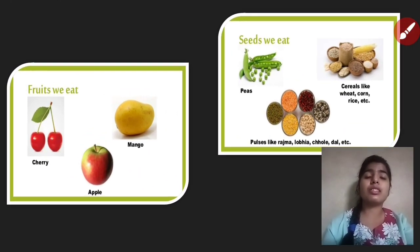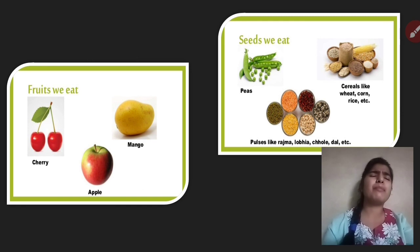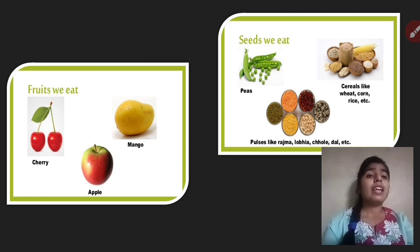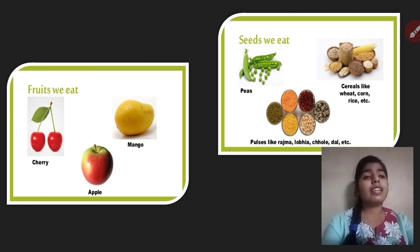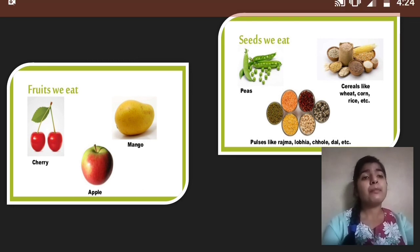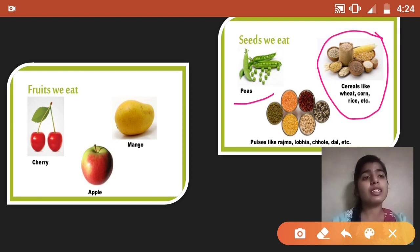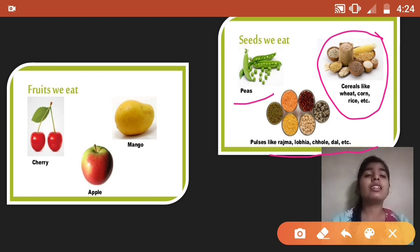Examples of leaves are spinach, methi, coriander, etc. Next, fruits — cherry, apple, mango, and many more. And the seeds that we eat are peas, cereals like wheat, corn, rice, etc., and pulses like rajma, chole, dal — these are all seeds.